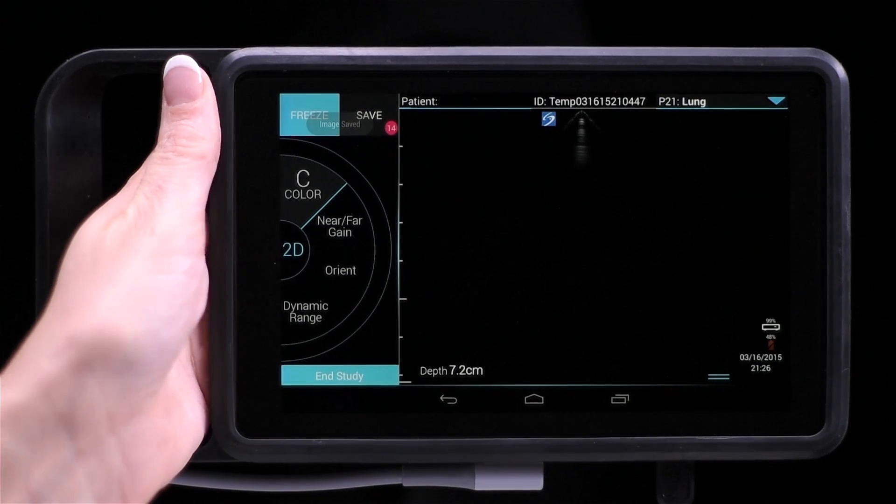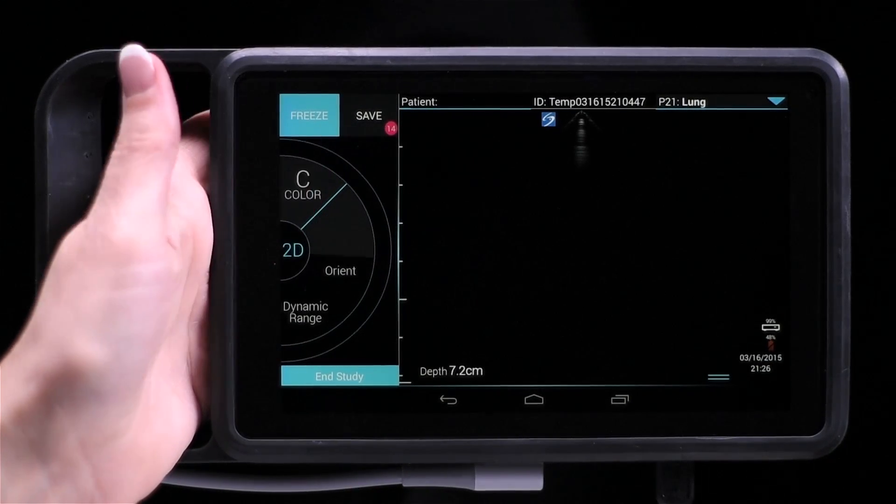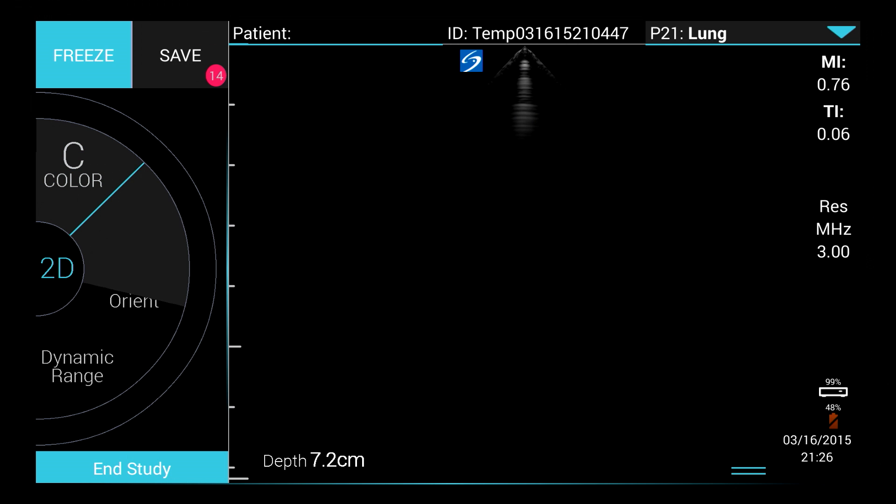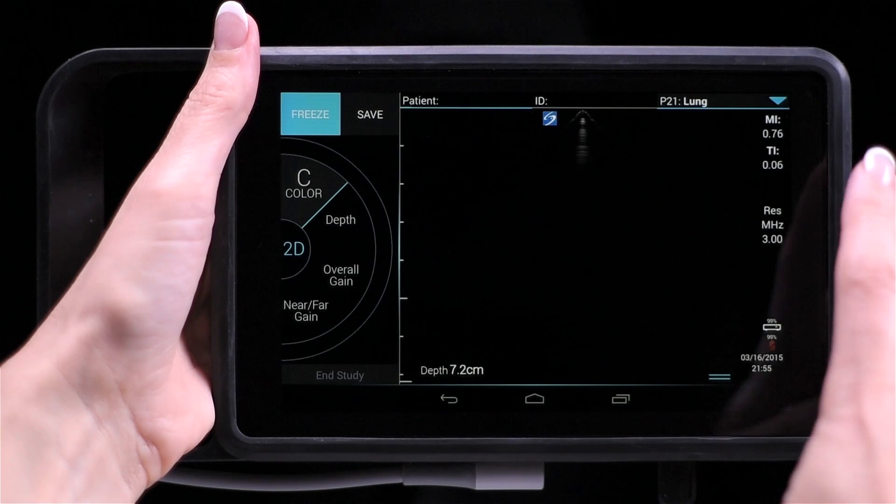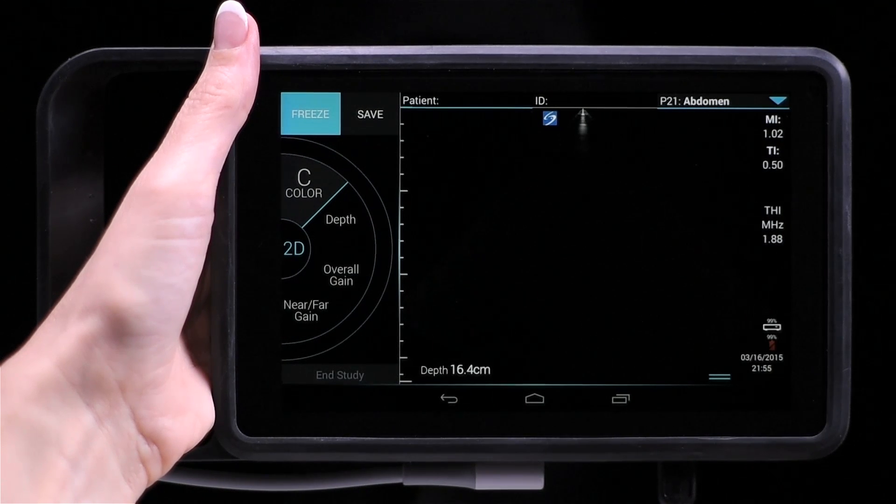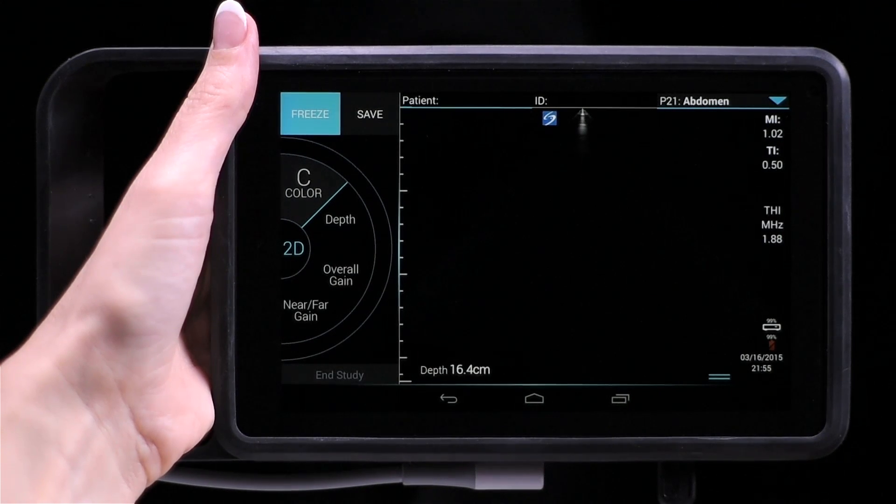Tap Color to go into color mode and tap it again to turn it off. You can select a different exam type from the drop-down list in the upper right-hand corner, and you can also select a guided protocol.